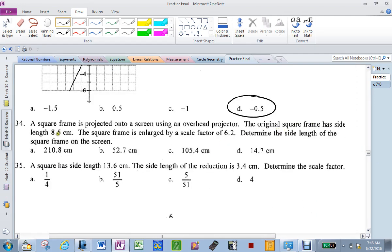The original frame is 8.5. The new frame is 6.2 scale factor. So I take 8.5 and I multiply it by 6.2. Now that's pretty close to 9 times 6, right? Which is 54. So what's that one?